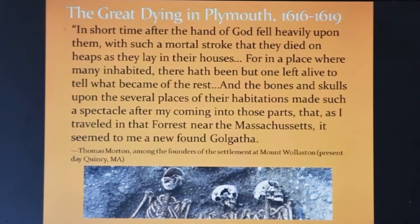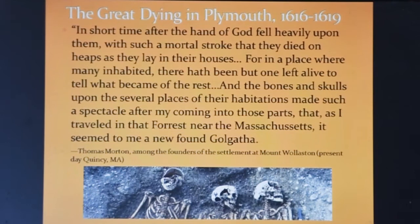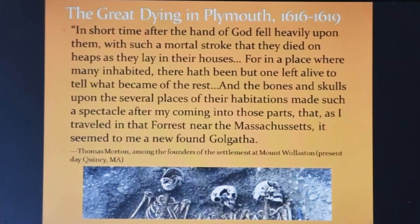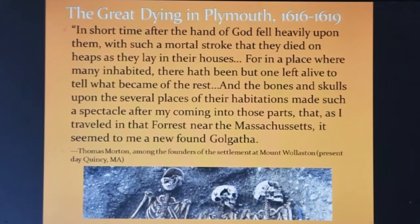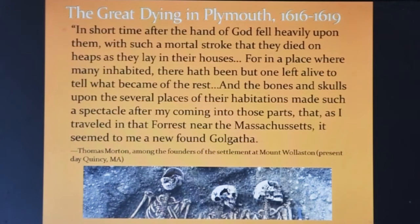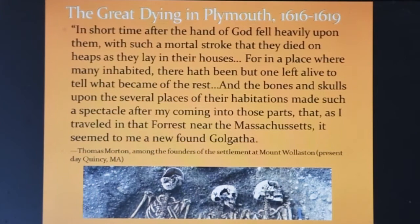Thomas Morton described the scene in the native village of Patuxet, which the English called Plymouth, when they arrived in 1620. He states: 'In short time after, the hand of God fell heavily upon them with such a mortal stroke that they died in heaps as they lay in their houses. For in a place where many inhabited, there had been but one left alive to tell what became of the rest. And the bones and skulls upon the several places of their habitations made such a spectacle after my coming into these parts that as I traveled in that forest near the Massachusetts, it seemed to me a newfound Golgotha.'